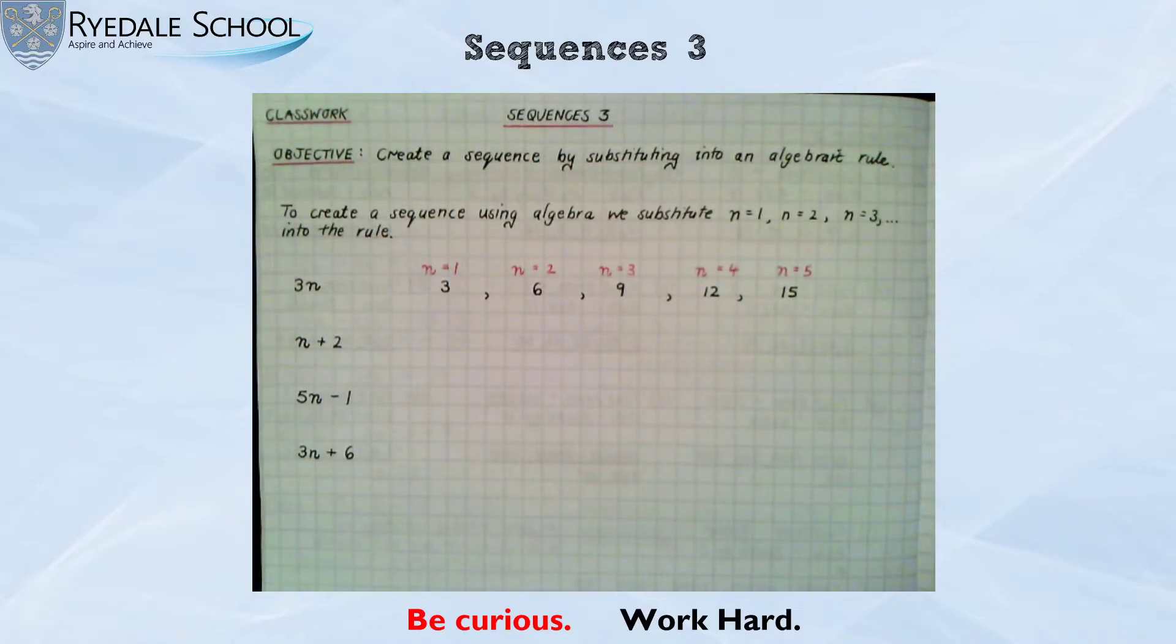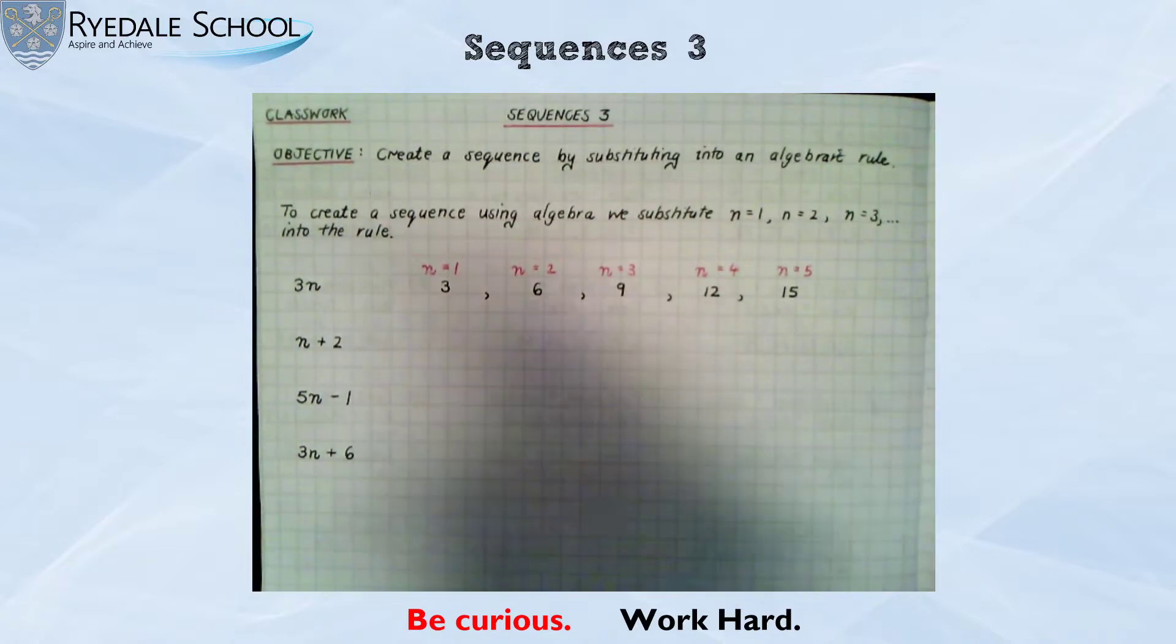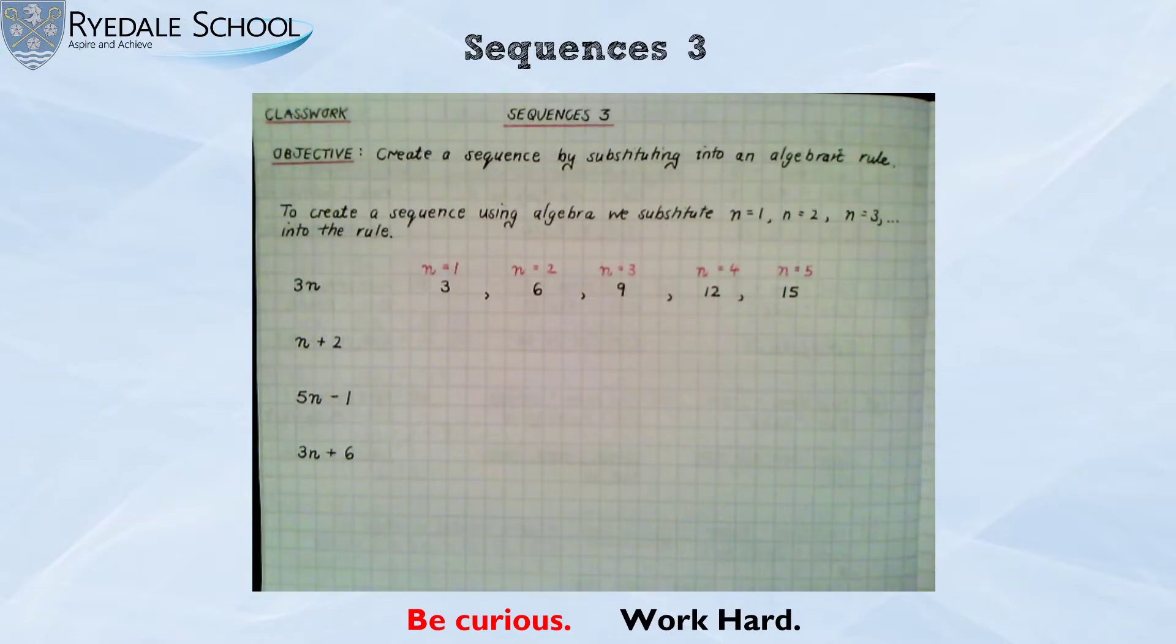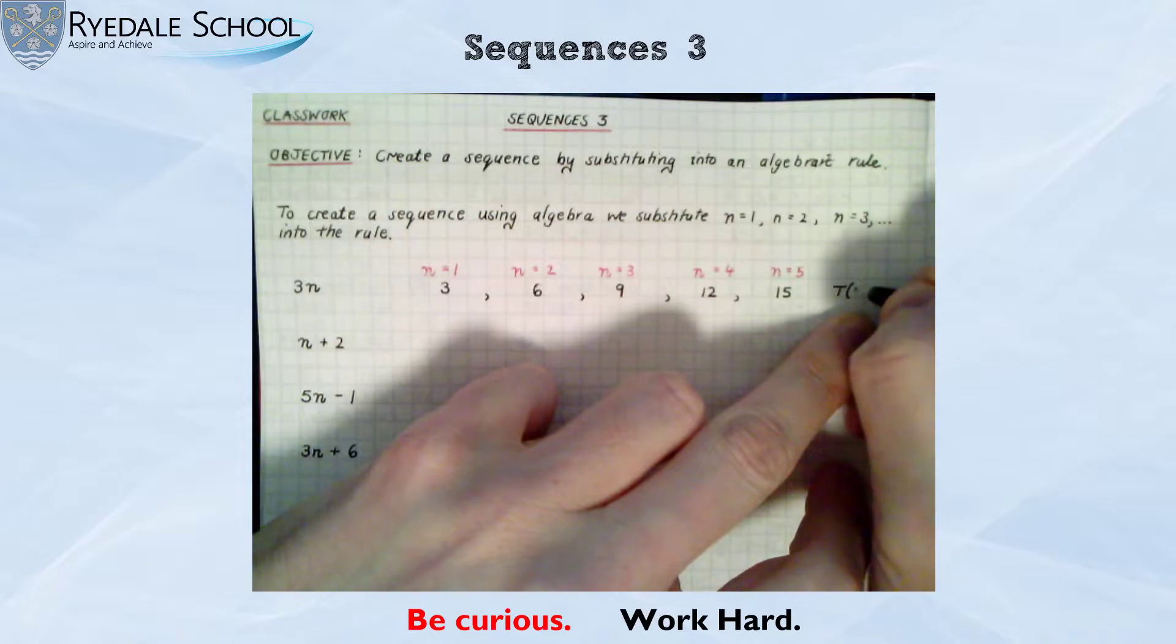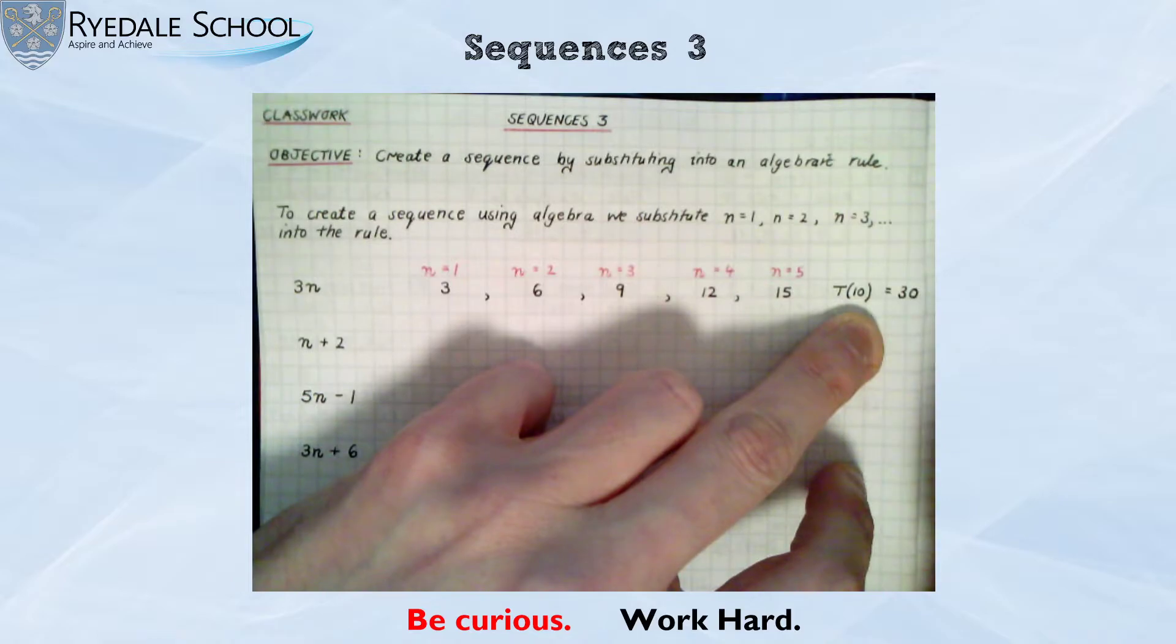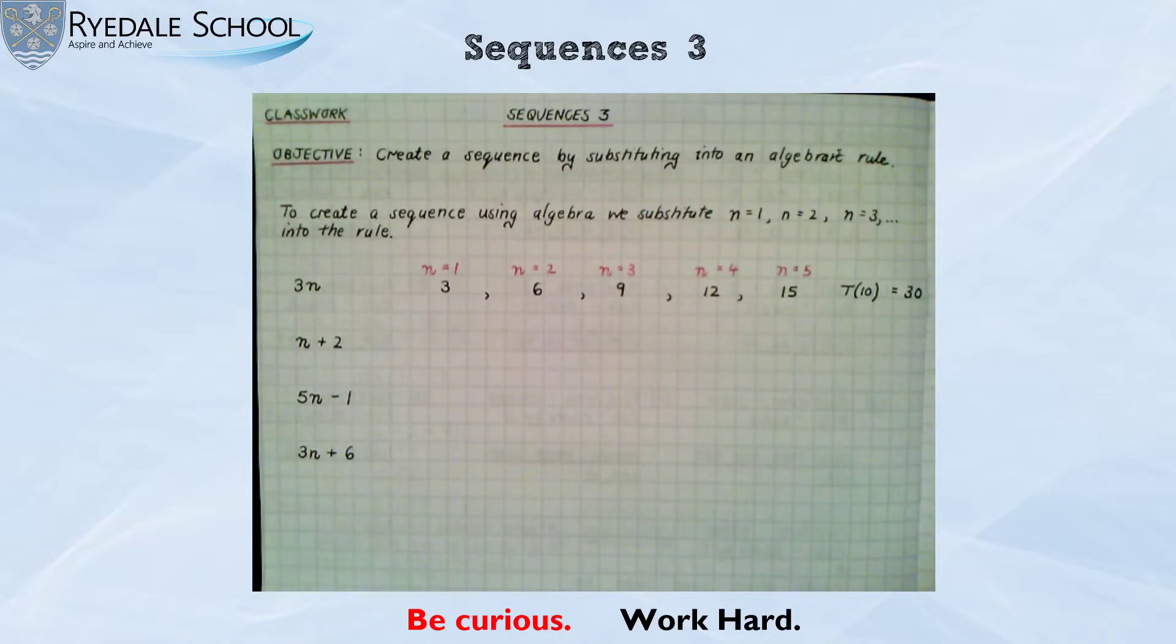Now I said earlier the great thing about algebra is you can work out some other terms in this sequence without having to write out the whole sequence. If I wanted the 10th term I would substitute n is 10. I would do 3 times 10 and it would be 30. So the 10th term in this sequence would be 30. And a way that I can write that is I could say that t10, term number 10, equals 30. So that is my first sequence done.